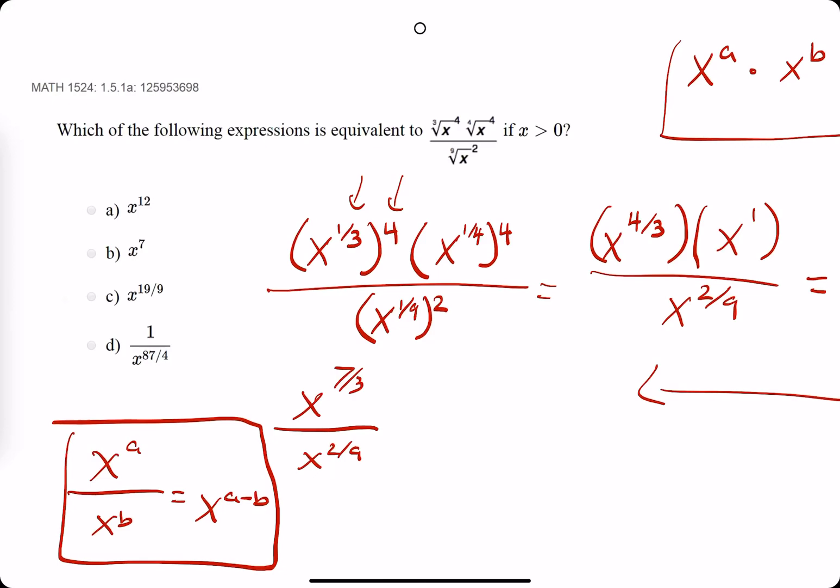So from here, we get x to the seven-thirds minus two-ninths. Wow, that's a fun fraction there. But all we need is a common denominator. We have seven-thirds, which we can multiply both values by three to get 21. Seven times three is 21. Three times three is nine minus two-ninths.